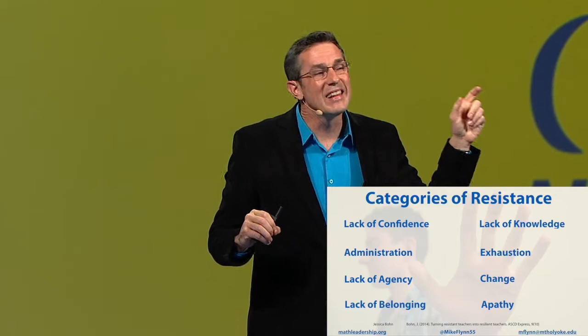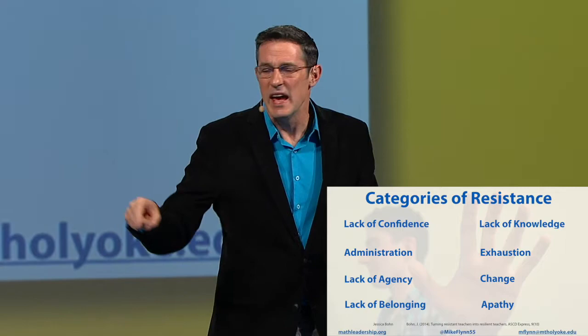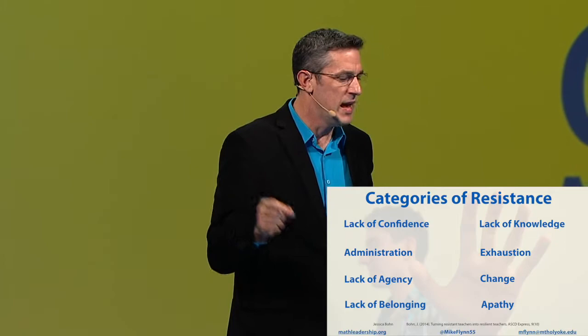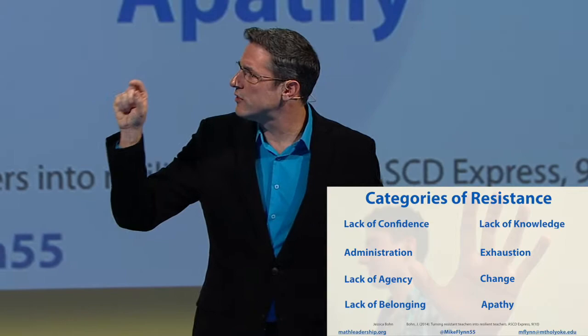The interesting thing is that we have a lot of different categories of resistance, and the least common one that is actually true is apathy. Apathy seldom happens, believe it or not. Most of the time when you're encountering resistance, it's those other categories. It's just easy to go to apathy first because apathy is easy — I can't fix them, they're lazy. The other ones require us to actually look at changing parts of the system. If someone's resisting because they don't feel like they belong, that's a tough challenge to fill.